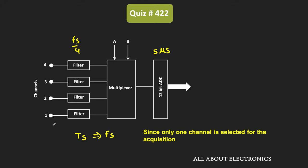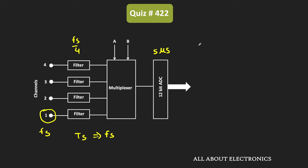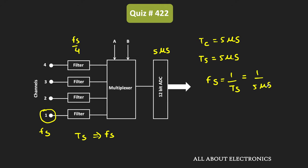Since only channel 1 is used, the sampling frequency for channel 1 is Fs. This sampling frequency depends on the conversion time of the ADC as well as other delays in the system. Since no other delays are given, we assume the conversion time decides the maximum sampling frequency. The conversion time is 5 microseconds, so the sampling interval Ts is also 5 microseconds. Therefore, the sampling frequency Fs = 1/Ts = 1/5 μs = 200 kHz.